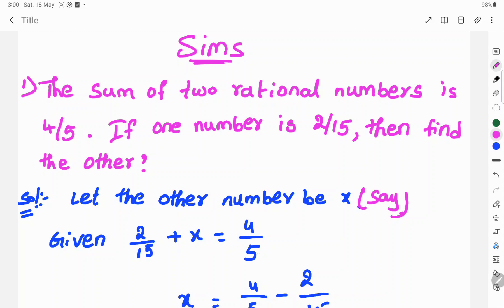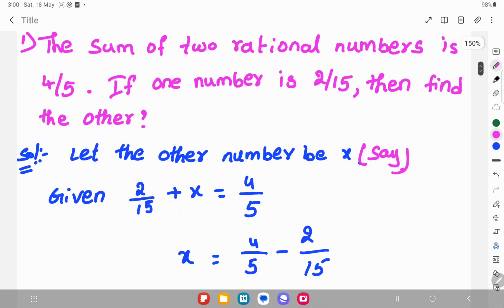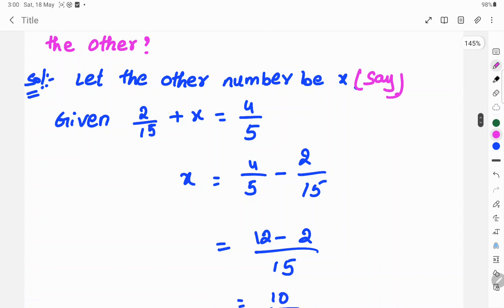Given one rational number is 2 by 15, so 2 by 15 plus x is equal to 4 by 5. To find the x value, x is equal to 4 by 5 minus 2 by 15.